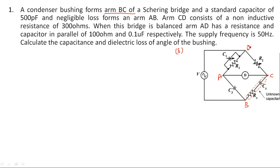You cannot randomly assign the nodes — you have to follow either the anti-clockwise or clockwise direction. Here it is in the anti-clockwise direction: A, B, C, D. You have to examine whether the remaining arms satisfy this. So AB is having a negligible-loss capacitance of 500 picofarads, and CD is having a resistance of 300 ohms.